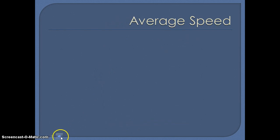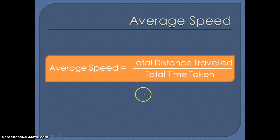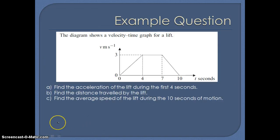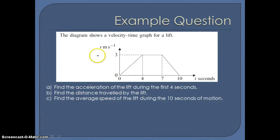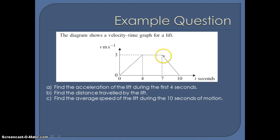The final thing we're going to consider is average speed. We can calculate the average speed by considering the total distance travelled divided by the total amount of time the journey took. For a quick example: we've been given a velocity-time graph for a lift. There's a first stage where velocity is increasing, a second stage with constant velocity, and a third stage where velocity decreases again.